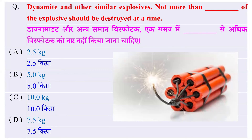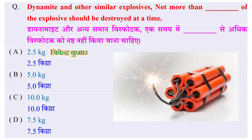Dynamite and other similar explosives — not more than how much kg of explosive should be destroyed at a time? Dynamite और अन्य समान विस्फोटक — एक समय में कितने kg से अधिक विस्फोटक को नष्ट नहीं किया जाना चाहिए? Options: 2 kg, 5 kg, 10 kg, या 7.5 kg — and the right answer is 2.5 kg।